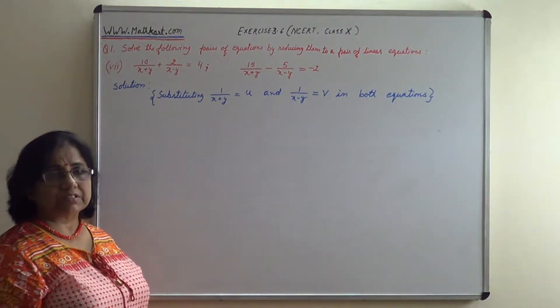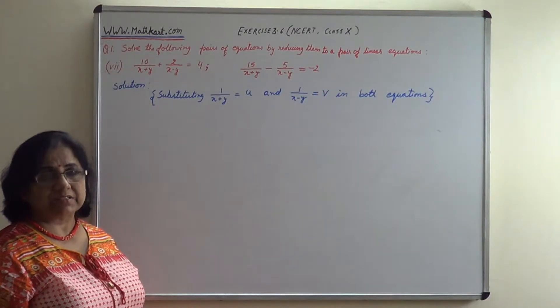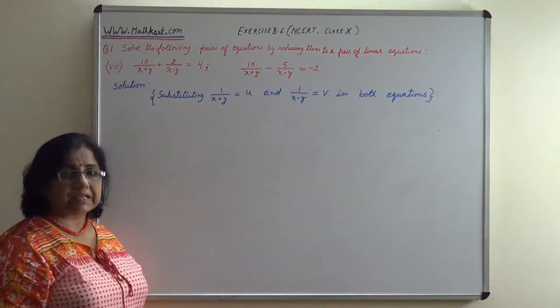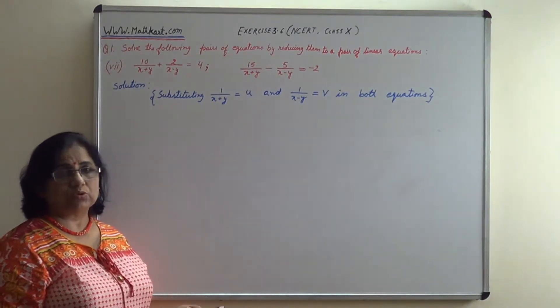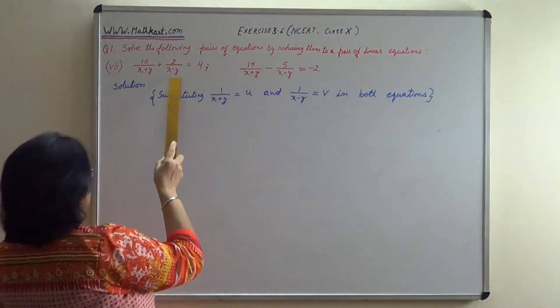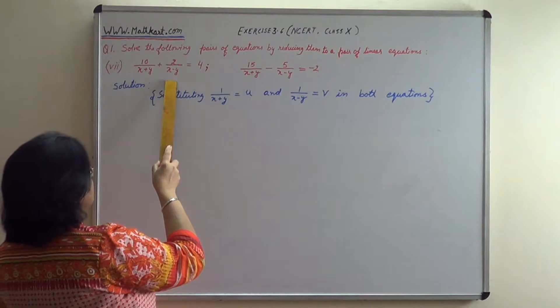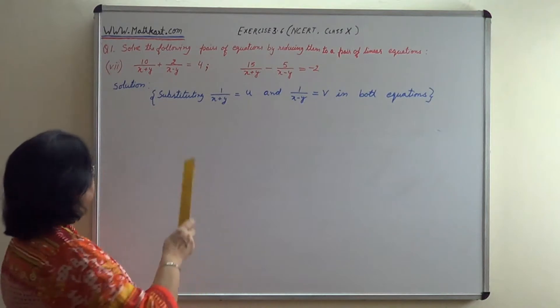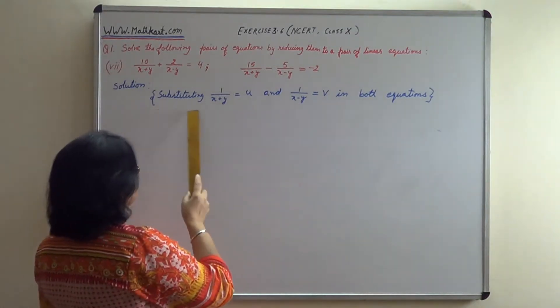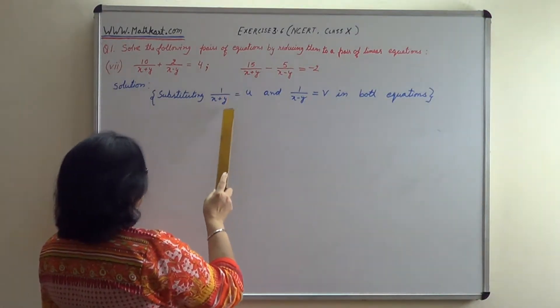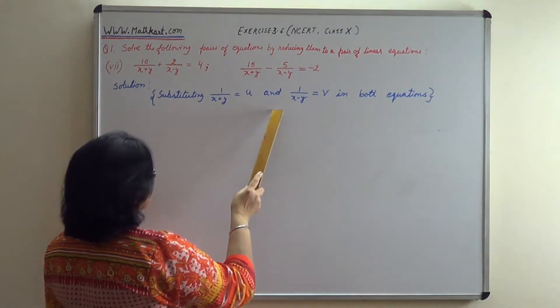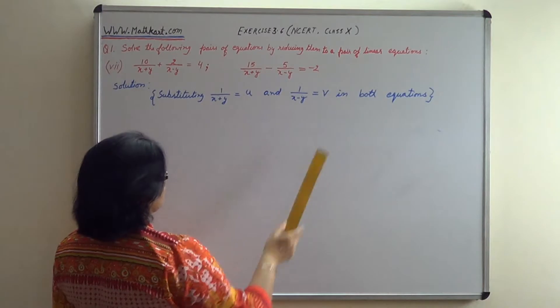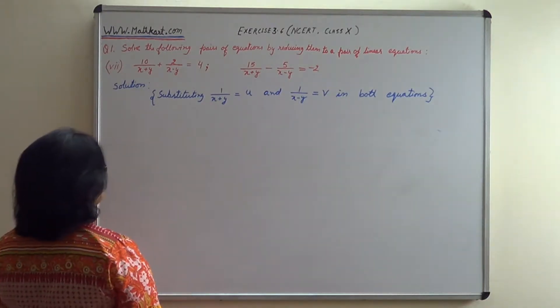We need to first change these equations into linear equations and then solve them. By substituting 1 upon x plus y equals u and 1 upon x minus y equals v in both equations, our equations will become: